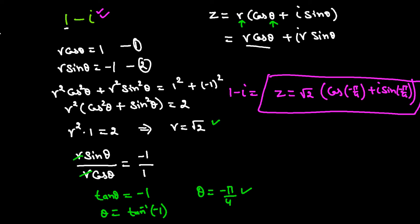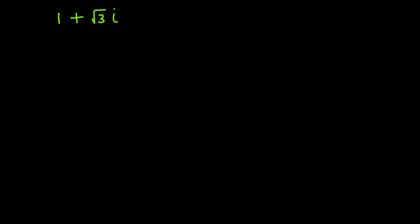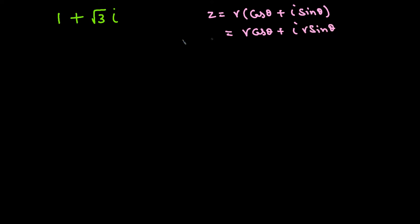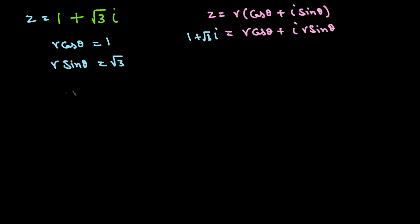For the second example, we have 1 plus square root of 3 times iota. We'll write the polar form of this complex number. Starting again with Z equals R(cosine theta plus iota sine theta), comparing real and imaginary parts gives R cosine theta equals 1 and R sine theta equals square root of 3.